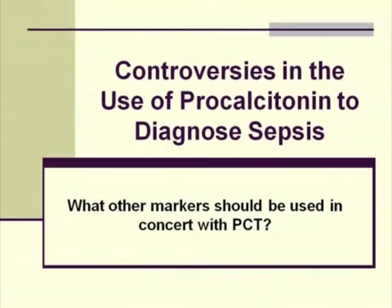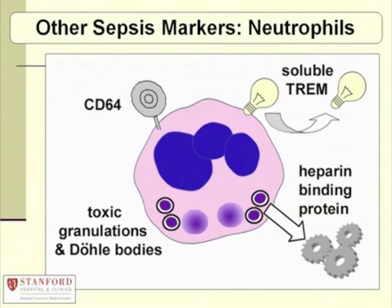Finally, this is a question more for the future: what other markers should be used in concert with PCT? We already have some markers in use, especially CRP — C-reactive protein. I don't necessarily think procalcitonin needs to replace CRP; if physicians are already using CRP to monitor ICU patients, it may be a helpful additive. The future probably holds promise for more novel markers, with a focus on the polymorphonuclear leukocyte.